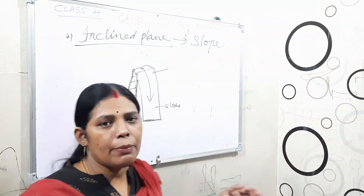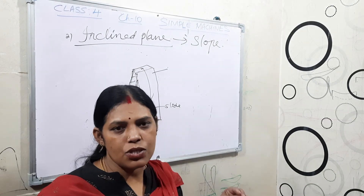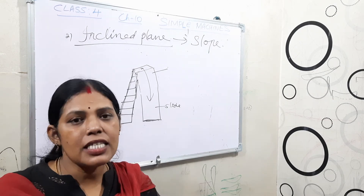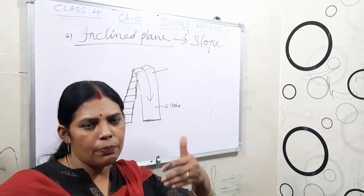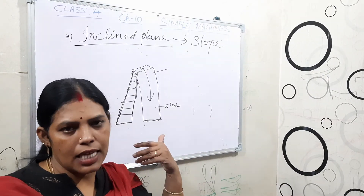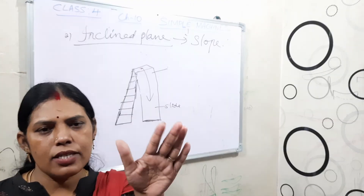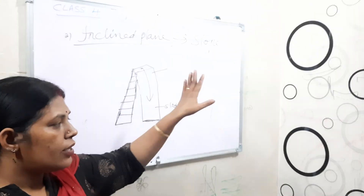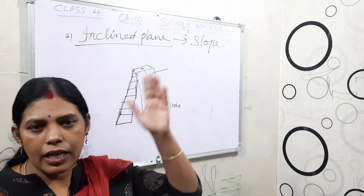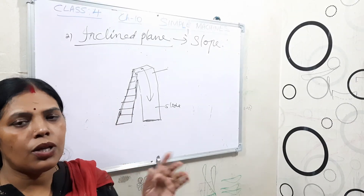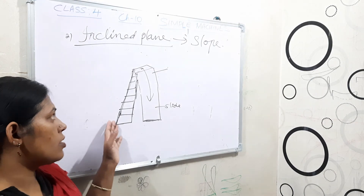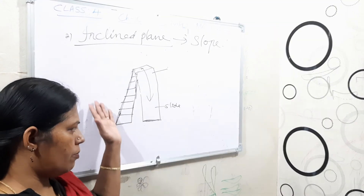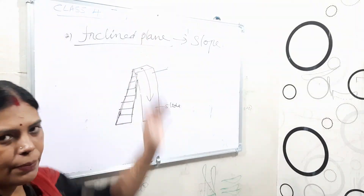We can also say ramp. Ramp means — in front of your house, near the gate, that raised platform is there. Through that your father brings the vehicle inside. And also in hilly areas, those roads also act as an inclined plane. It helps to move the heavy weight a little bit up.